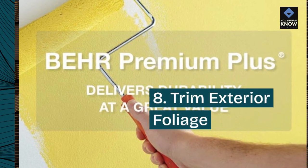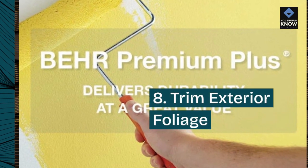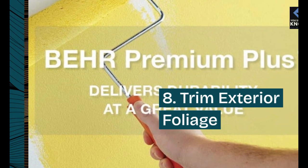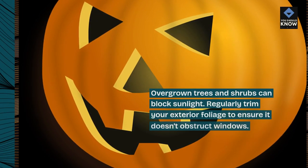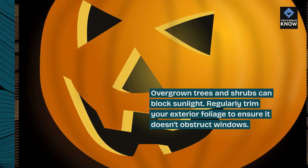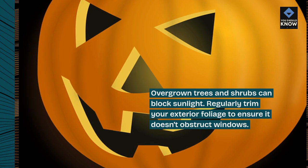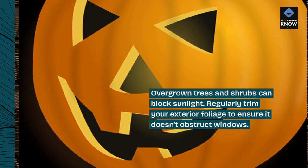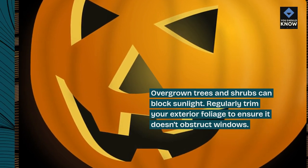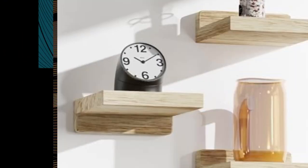8. Trim exterior foliage. Overgrown trees and shrubs can block sunlight. Regularly trim your exterior foliage to ensure it doesn't obstruct windows.